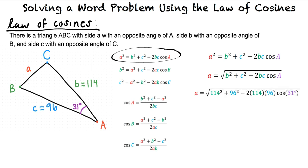Now we can solve for side A. We get 58.7. The distance between the kites is 58.7 feet.